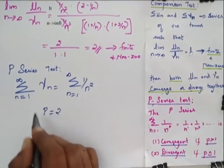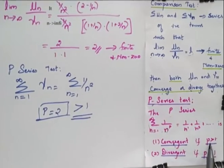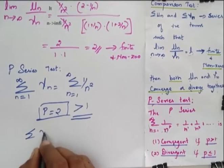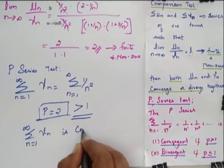So my p is equal to 2 which is greater than 1. So when this is greater than 1, it is convergent. So summation vn, n tending to 1 to infinity, is convergent.